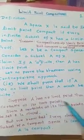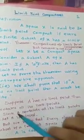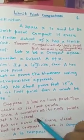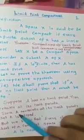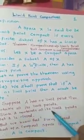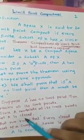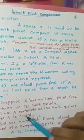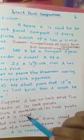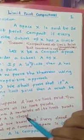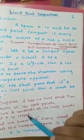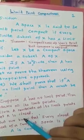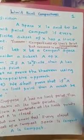Suppose A has no limit point. Then it contains all its limit points. Since A contains all its limit points, A must be closed. We know that if a set contains all its limit points then it must be closed. By that definition, we have that A is closed.